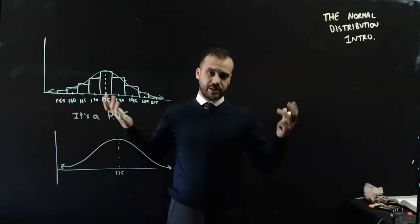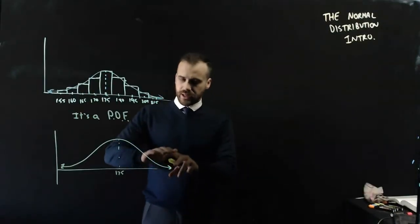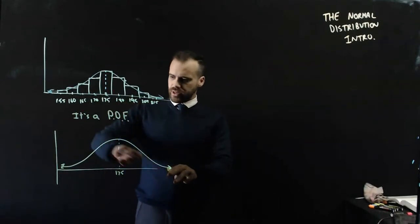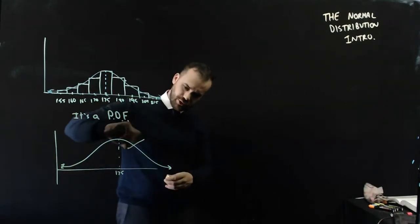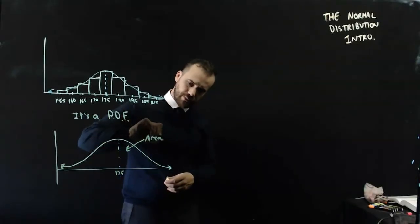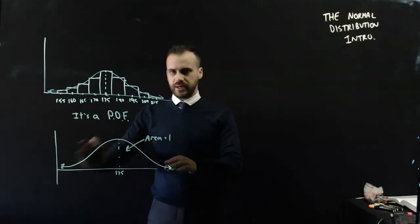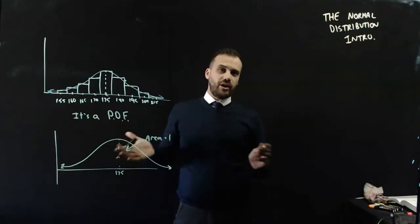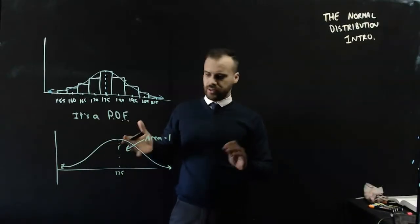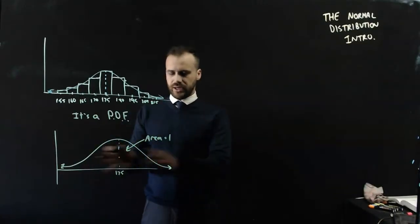So, important for you to understand is that it is a PDF. It's a probability density function, which means a couple of things. The area under here is going to be equal to 1. Okay, because someone has to have a height, right? They don't exist without a height. So, the total area under here is 1.